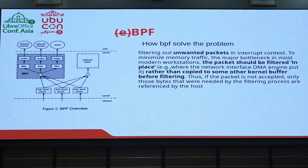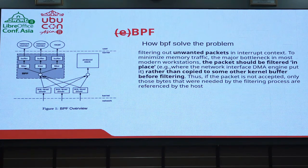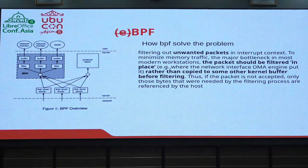Now, BPF came as the solution. BPF filters unwanted packets in the kernel context itself. The network packets, after reaching the kernel space, are copied into the BPF collection interface, then filtered in the kernel itself. So there's no forwarding to user space or filtering in user space. This optimization was a pretty big revolution at the time — from the benchmark, it was almost 30% faster than the previous packet filtering approach.